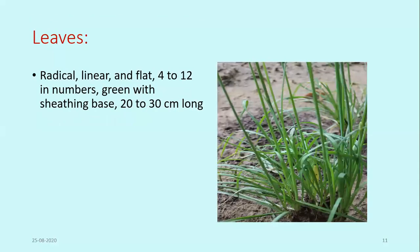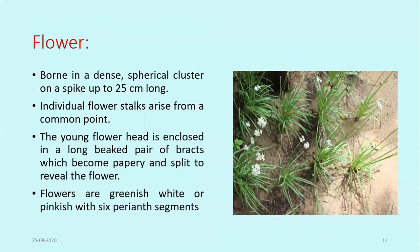The leaves are radical — arising directly from the root. They are linear and flat, approximately 4 to 12 in number, green in color with a sheathing base, and about 20 to 30 centimeters long, as clearly visible in the image. The flowers are borne in a dense spherical cluster on a spike up to 25 centimeters long, with individual flower stalks arising from a common point.